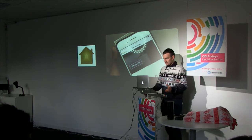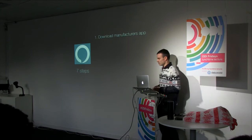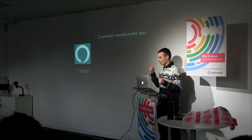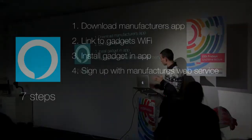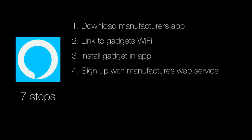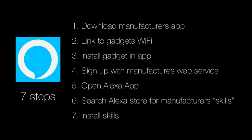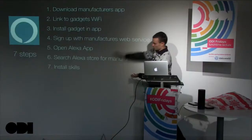Moving on to Alexa. The seven steps are: firstly, when you've got the device, you have to download the manufacturer's app. This is significantly different from Apple, where you use their own app and you're in their ecosystem using the Apple Home app without downloading a third-party one. So you download the manufacturer's app, link gadgets to your Wi-Fi, install the gadget in the app you've just downloaded — that normally involves signing up with the manufacturer and their web service. Then you open the Alexa app, find the manufacturer's skill within that app, and add it as a skill for it to work.